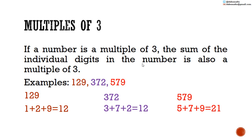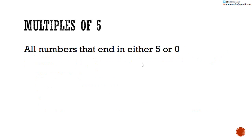Thus, 129, 372, and 579 are all composite numbers. All multiples of 5 end in either 5 or 0.